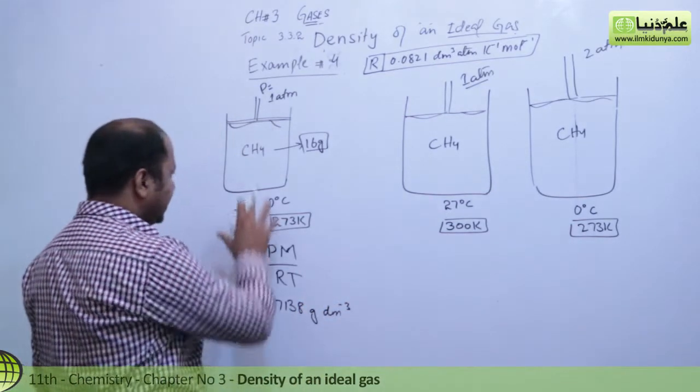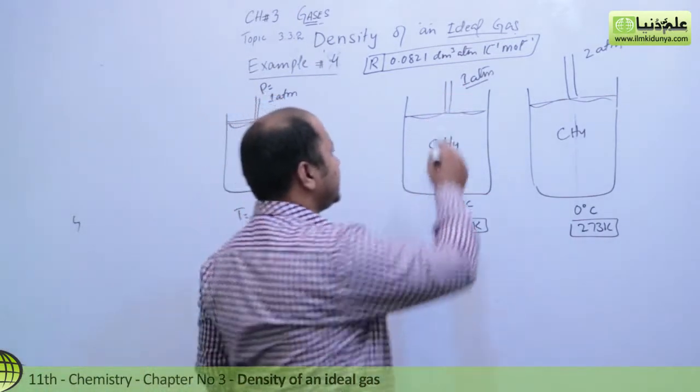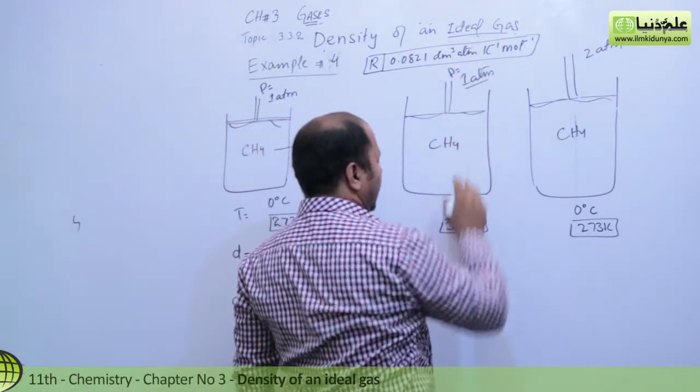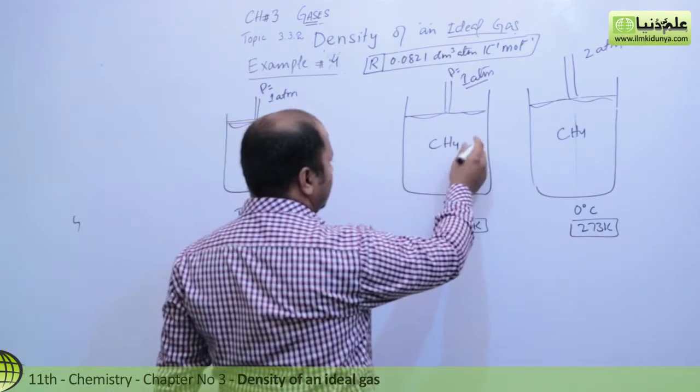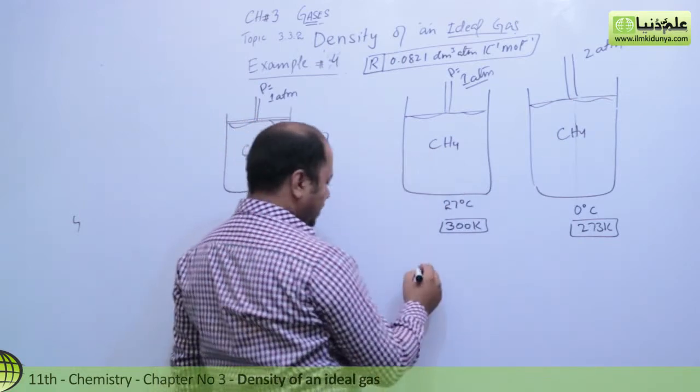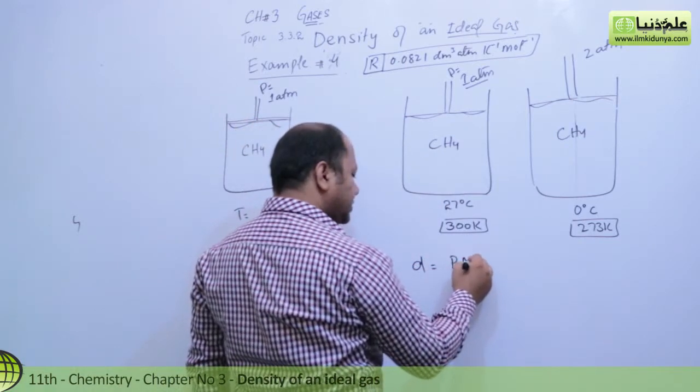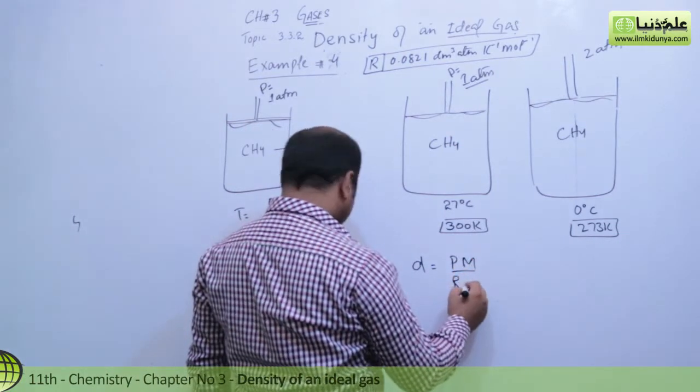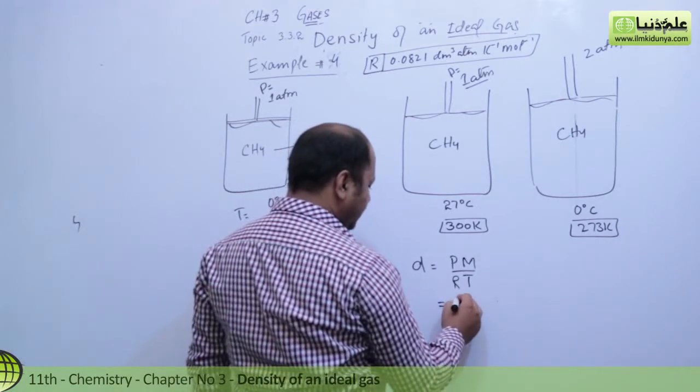That's the density for this cylinder. Here the pressure is 1 atm and temperature has been changed to 300 Kelvin. We have the same molecular mass for this gas, so the same formula will be applied: d equals pressure times molecular mass divided by R times temperature.